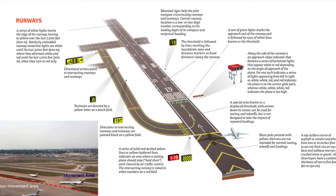Moving on to number five: the non-movement area boundary. The movement area is the part of an airport under control of the airport tower — essentially the runways and taxiways that directly connect to them. However, there are also parts of the airport not under tower control, but under ground controllers — these are called the non-movement area. Passing between the movement area and non-movement area, you will see a marking consisting of one dashed yellow line and one solid yellow line.